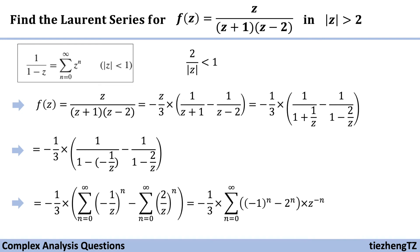So we have (-1)^n - (2)^n times z^(-n). And this is the result of the Laurent series for this function z/(z+1)(z-2) in |z| > 2.